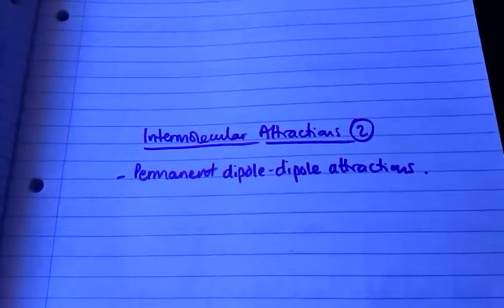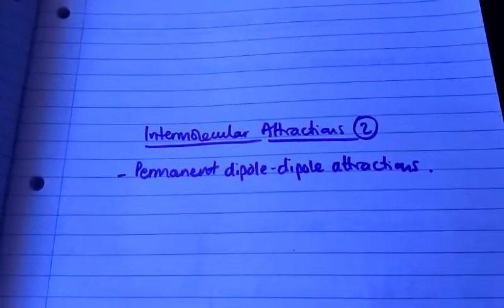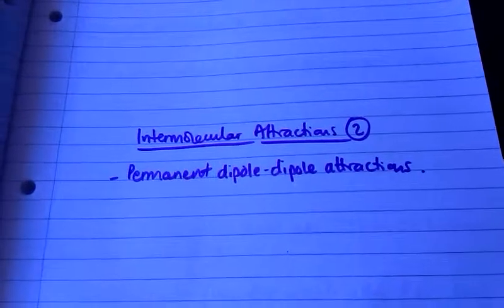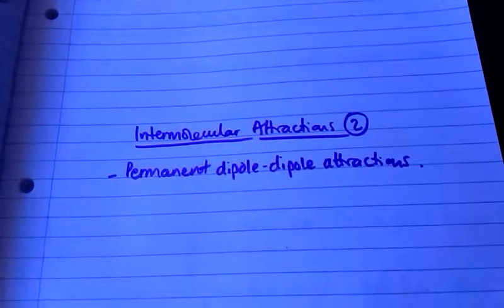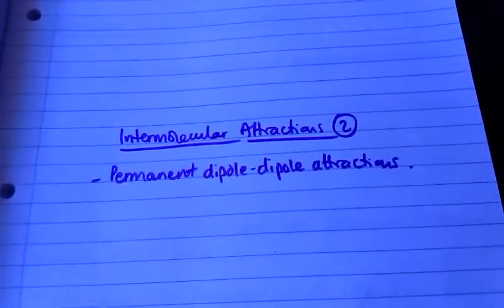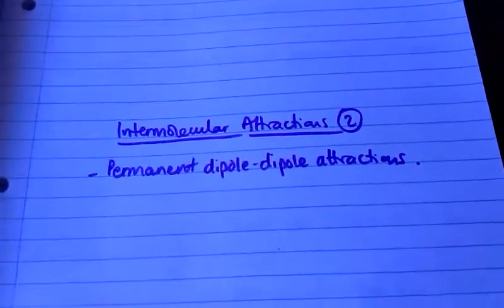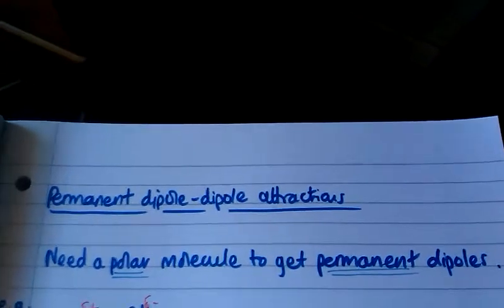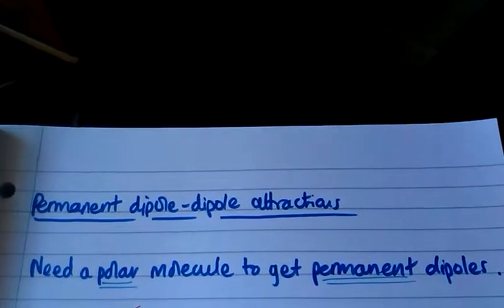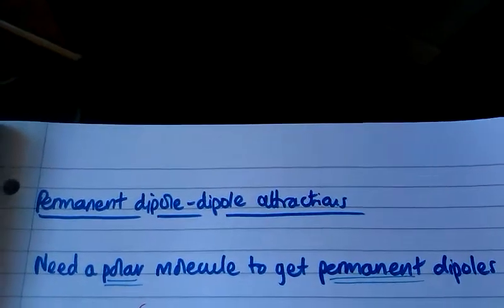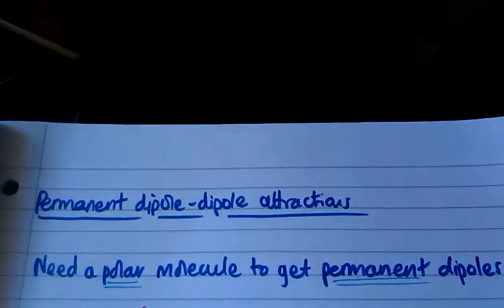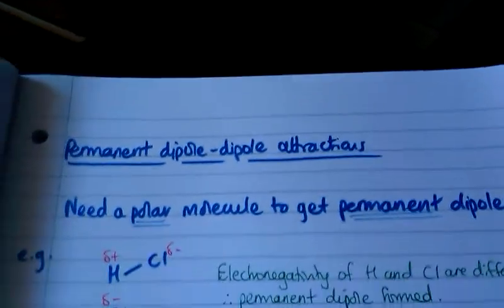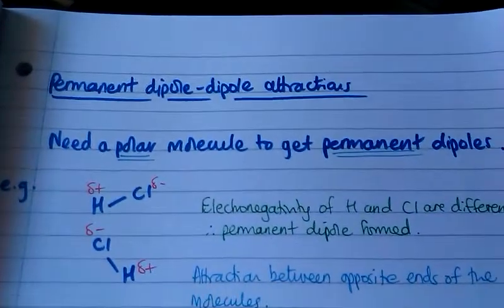This is the second video on intermolecular attractions and I'm going to go through permanent dipole-dipole attractions. In order to get a permanent dipole we need to have a polar molecule to begin with.